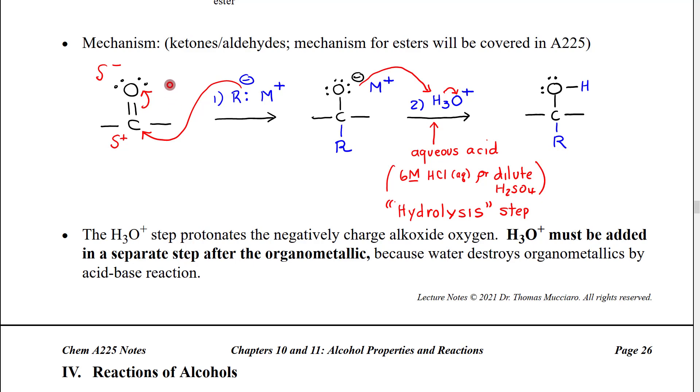And then a pair of electrons will be pushed out of the way onto the oxygen. So we will end up with an intermediate that looks like this: the organometallic carbon group attached to our central carbon, negatively charged oxygen as an alkoxide.